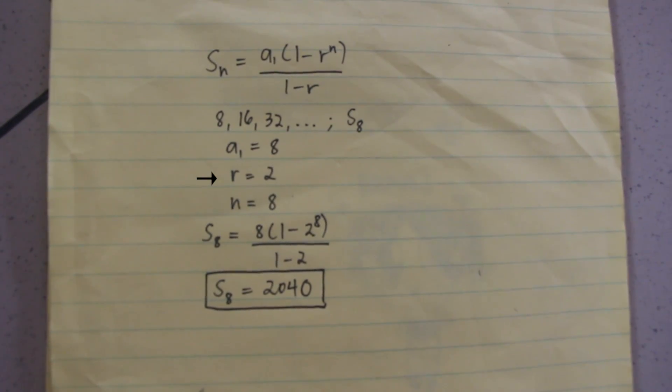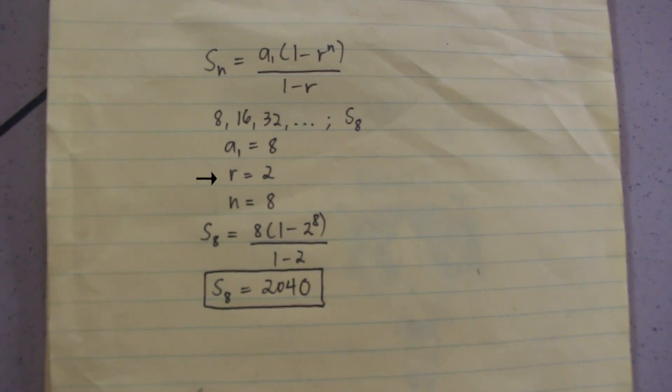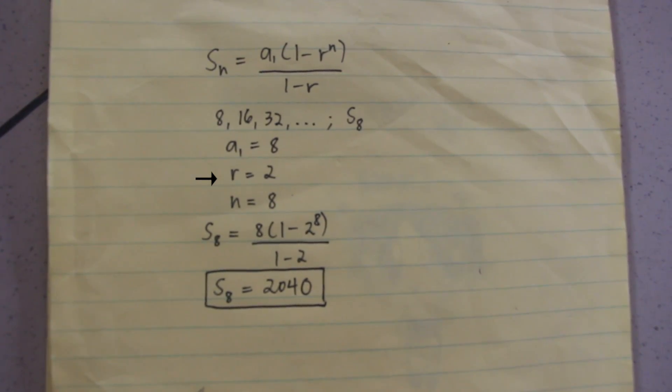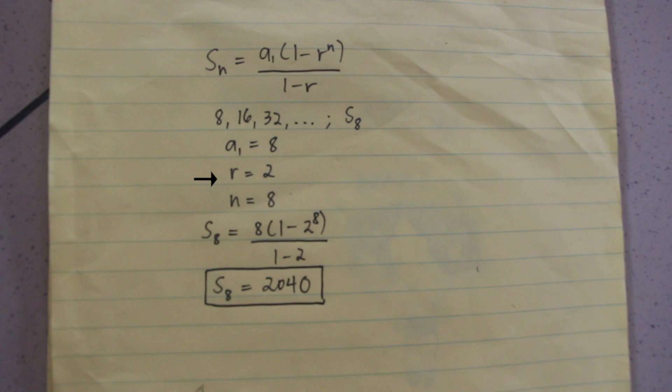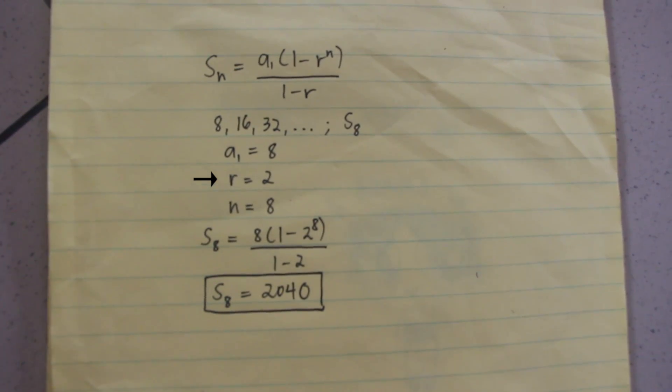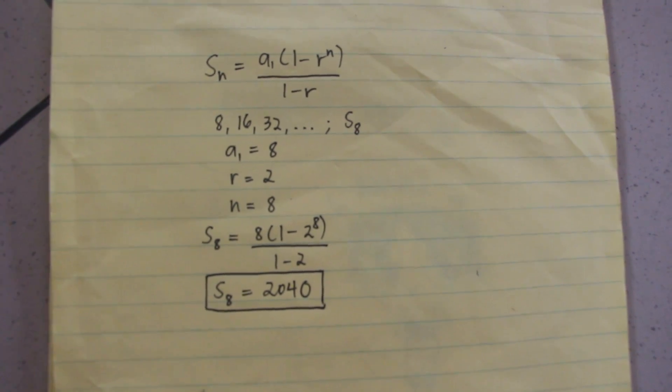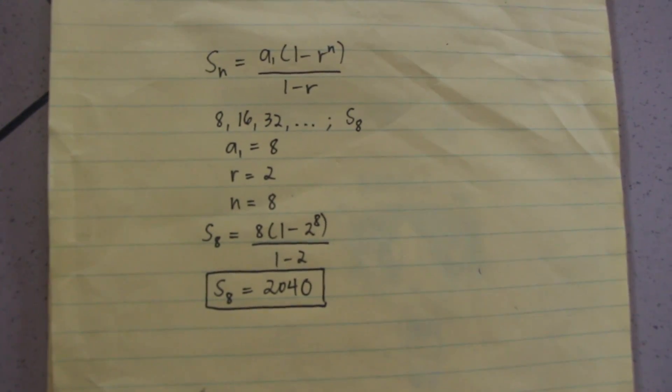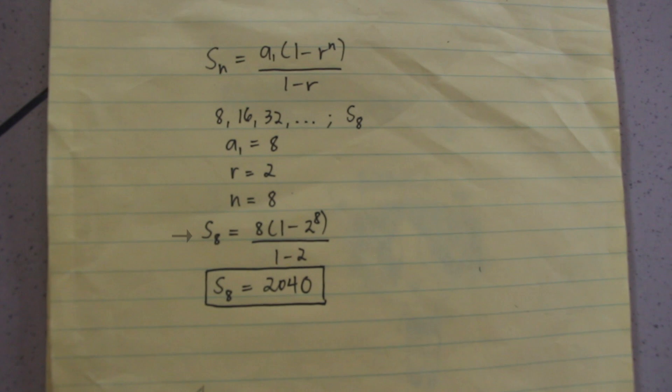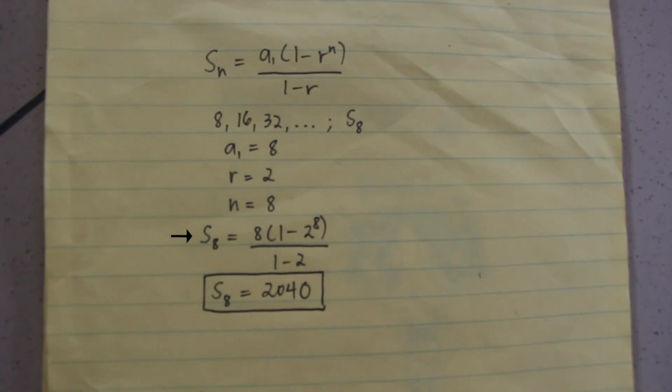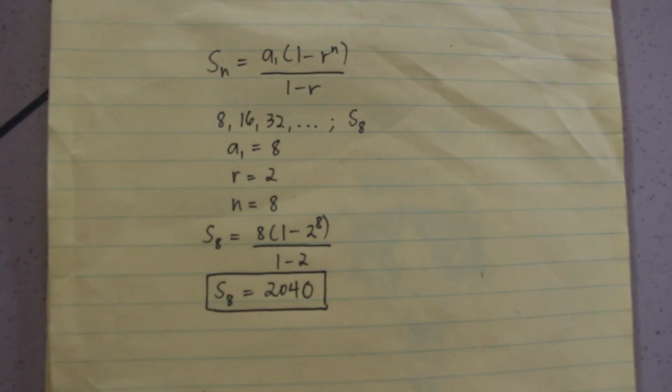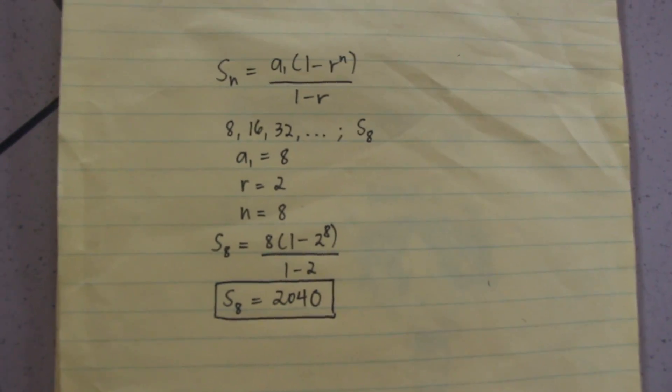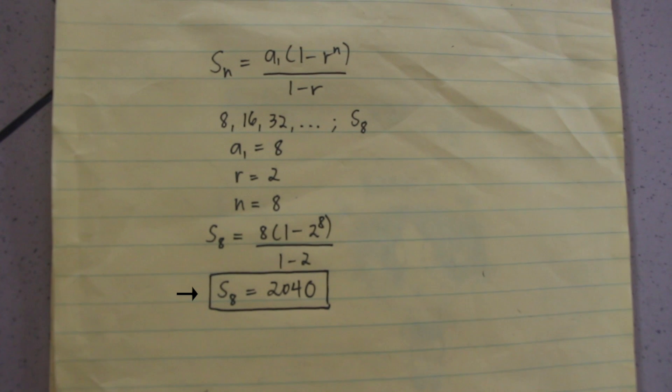Meanwhile, as r is the constant ratio between successive terms, we can use an instance from the given sequence, like 16 divided by 8, which is 2. Another instance may be 32 divided by 16, which will give us the same value. Finally, n or the first n terms is 8. Now, we plug in these three given values to the formula, getting an expression of S sub 8 equals 8 quantity 1 minus 2 to the 8 over 1 minus 2. Simplifying further, we conclude that the sum of the first 8 terms of the given geometric sequence is 2040.